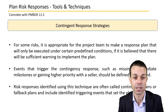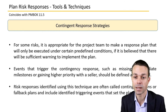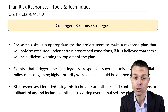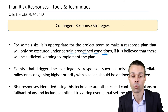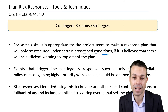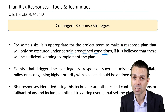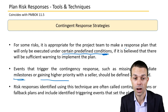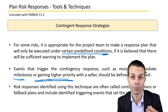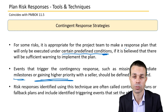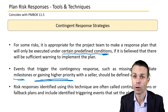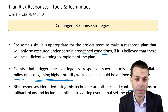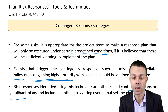Contingent response strategies apply to risks where the project team makes a response plan that will only be executed under certain predefined conditions — if there will be sufficient warning to implement the plan. Events that trigger the contingency response, such as missing intermediate milestones or gaining higher priority with a seller, should be defined and tracked. Risk responses identified this way are often called contingency plans or fallback plans, and include identified triggering events.